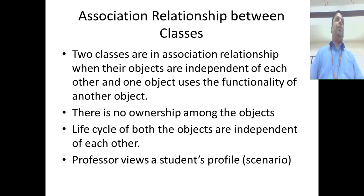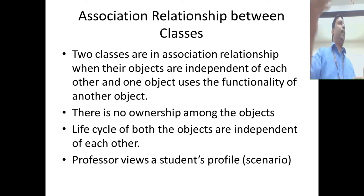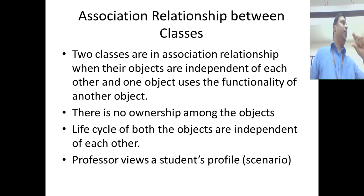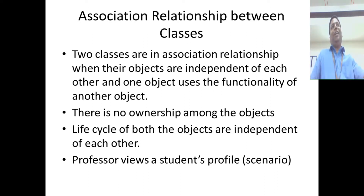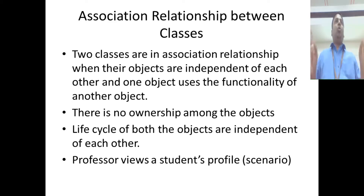Let's implement code for this. We'll create a professor object and a student object with all the profile data — say two or three fields. A professor should be able to view the student's data, provided they give the registration number of that student. We'll take one student object here to keep it simple. The professor should view the profile information of the student if the registration number provided matches. The relationship between these two objects is association.